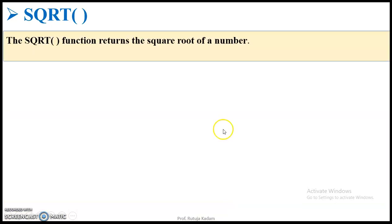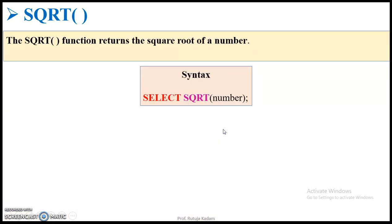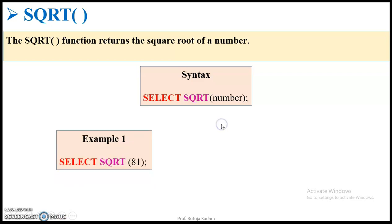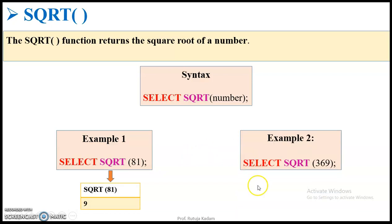Then comes the square root function. The square root function returns the square root of a number. The syntax is: SELECT SQRT(number). For example, SELECT SQRT(81) gives the output 9. Another example with 369 as input to the square root function gives the output 19.20.